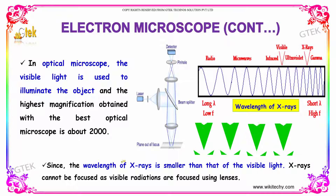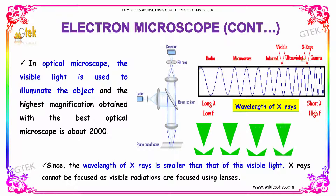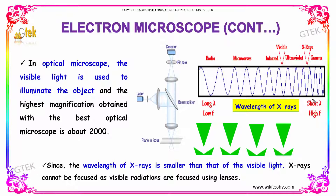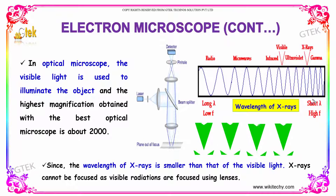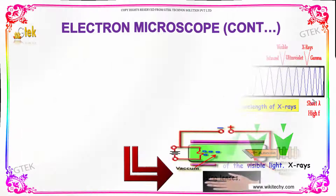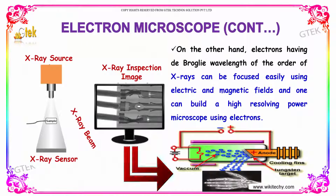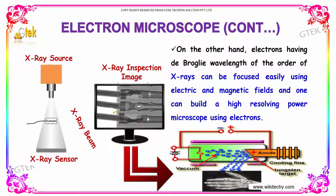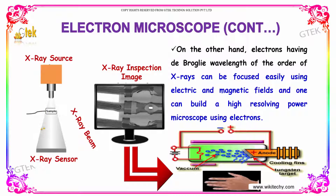Since the wavelength of X-rays is smaller than that of visible light, X-rays cannot be focused the way visible radiations are focused using lenses. On the other hand, electrons having a de Broglie wavelength of the order of X-rays can be focused easily using electric and magnetic fields, and one can build a high-resolving power microscope using electrons.